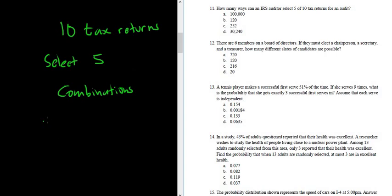So in this case, we have n equals 10. That's the total number of tax returns, and we're choosing 5 of them. The notation was n choose r, so we have 10 tax returns, and we're choosing 5 of them.